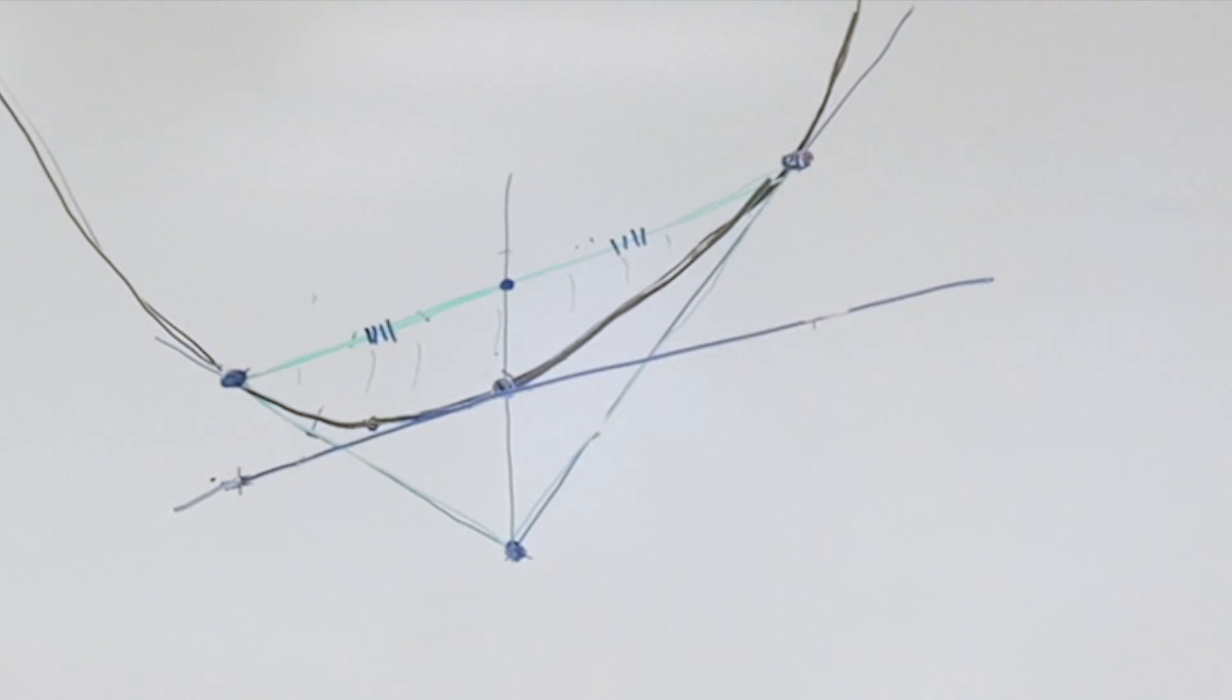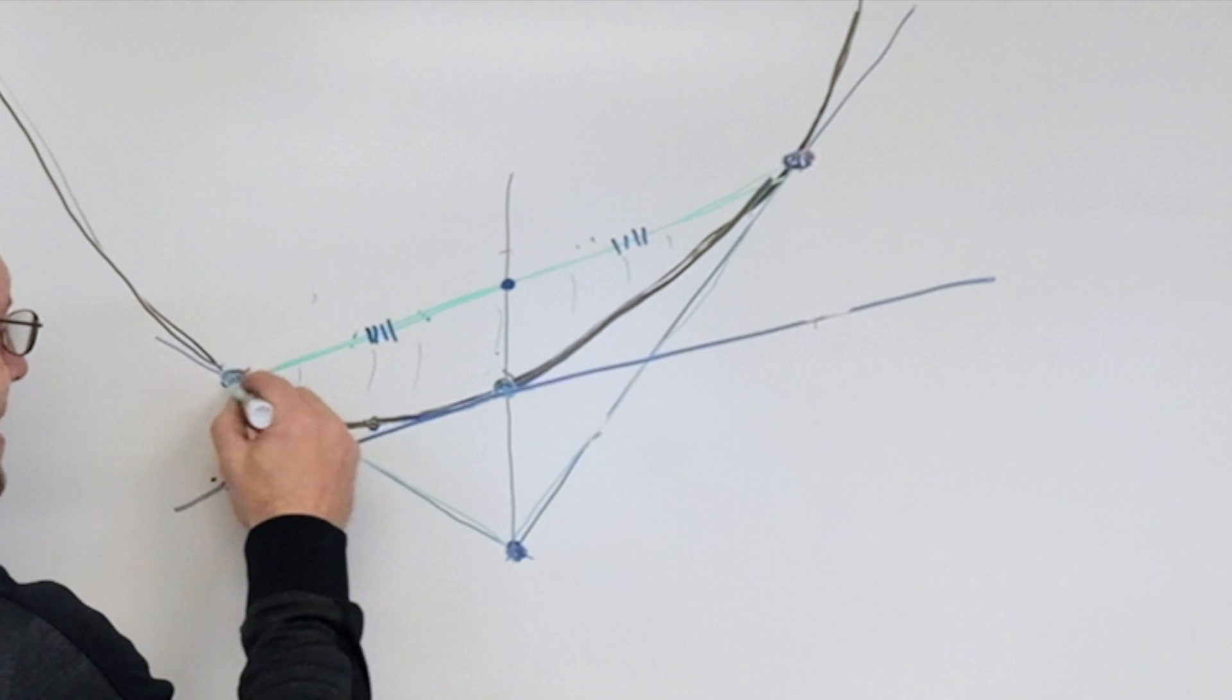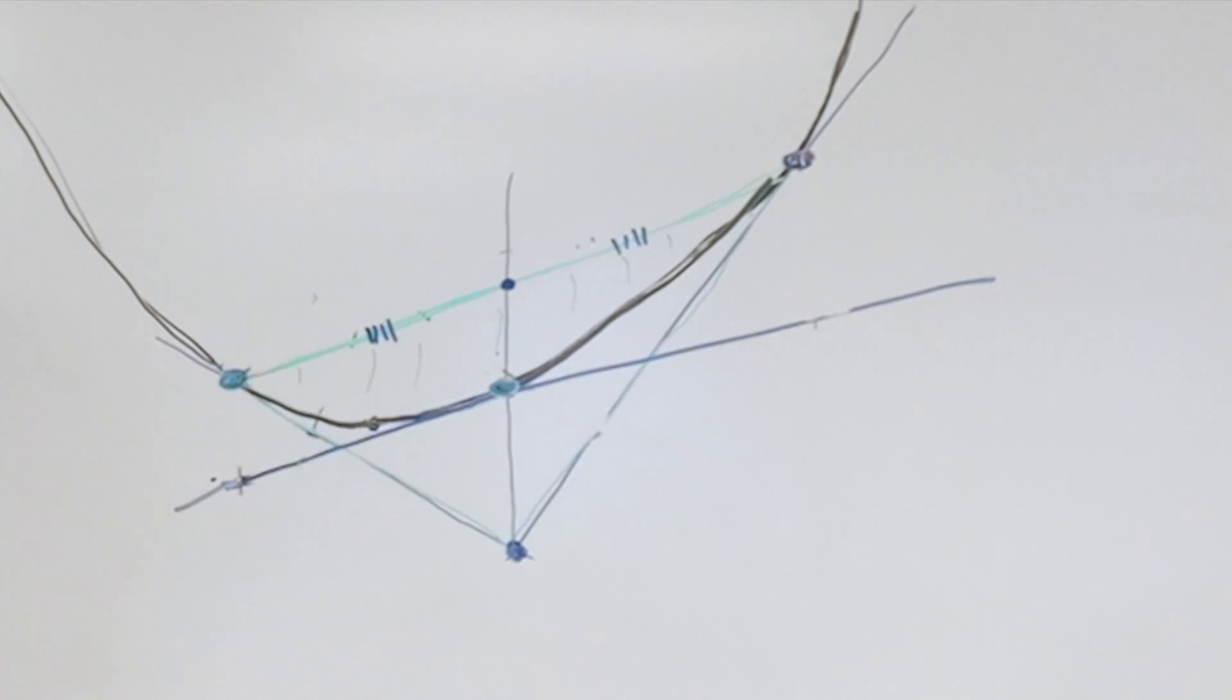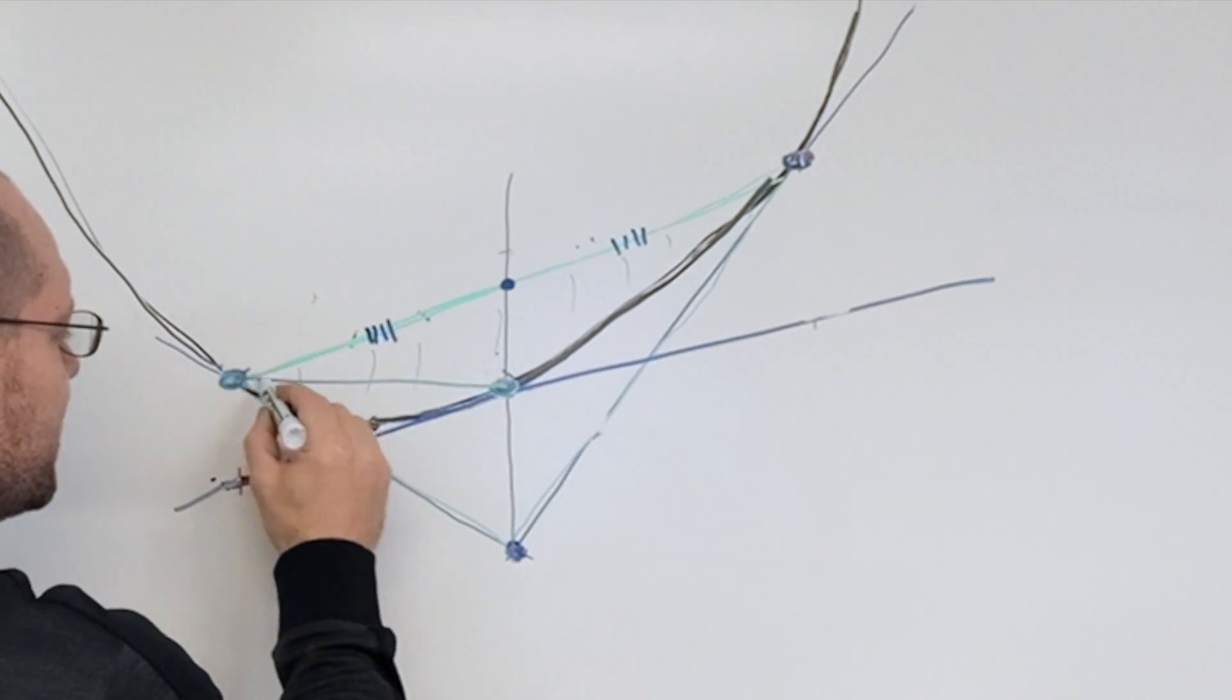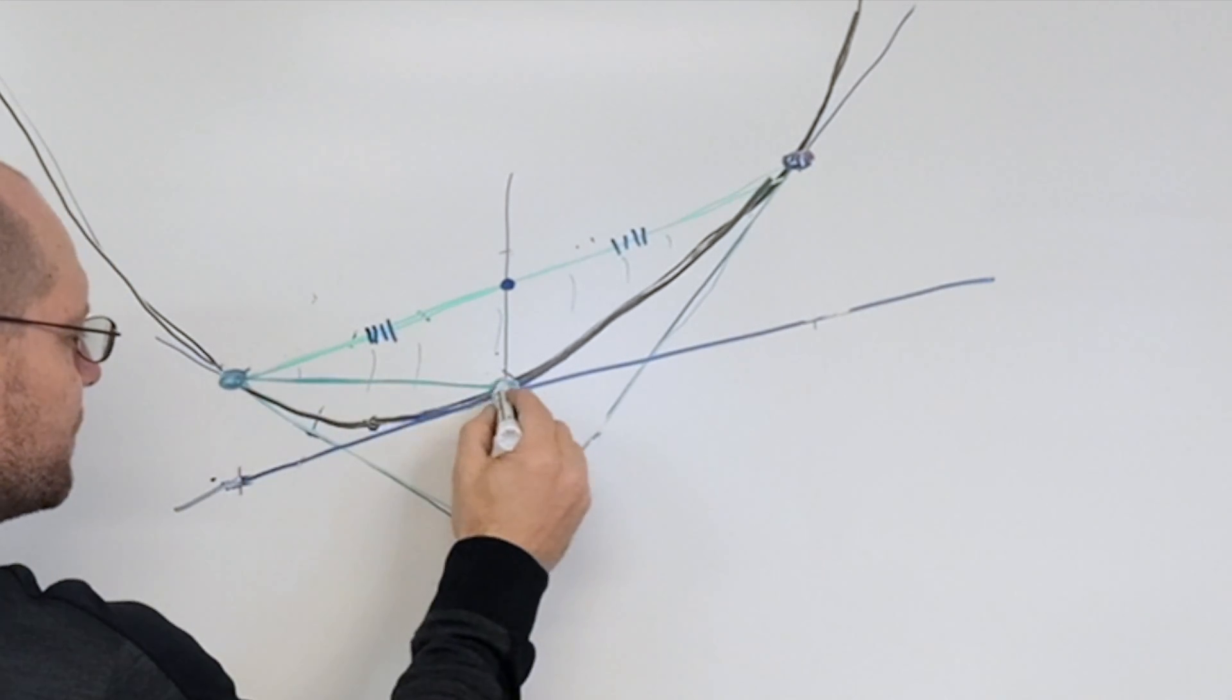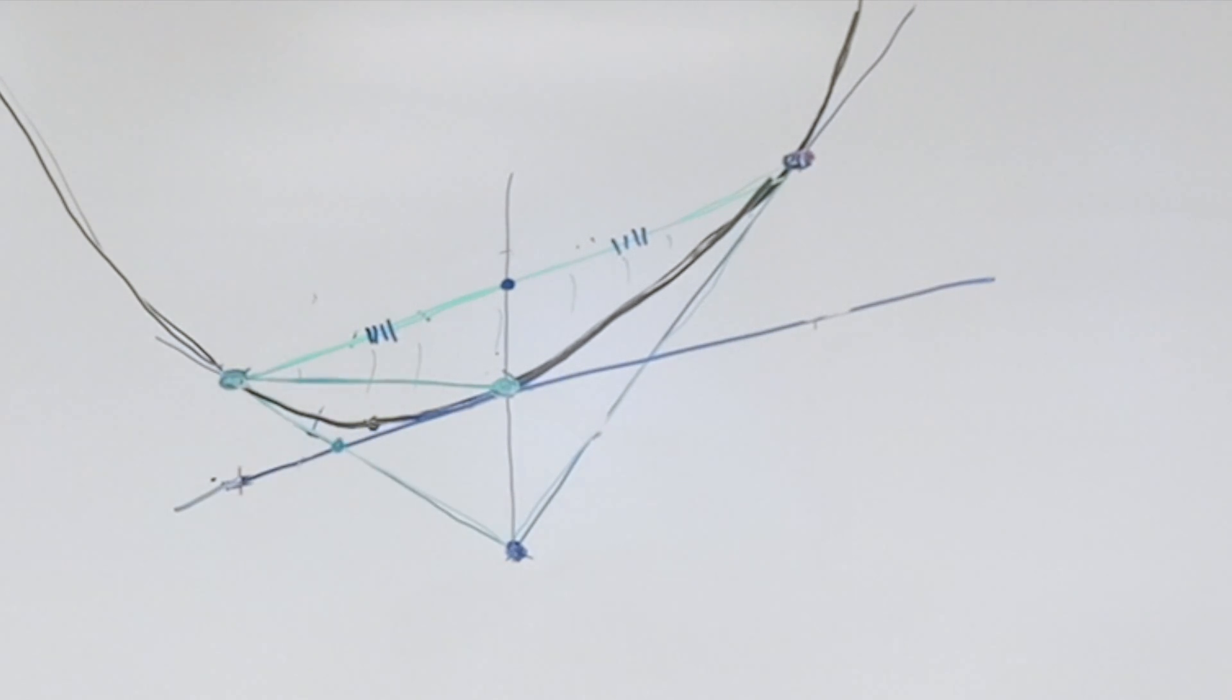But notice that we're kind of looking at three Archimedes triangles right here. Because this is another point on the parabola. So if I take these two points to be my vertices, then I have another Archimedes triangle. And it's right here. Vertex, vertex, third point. That's another Archimedes triangle. Which, in its own right, has the same property that we just discovered.